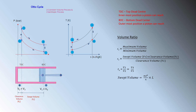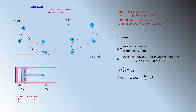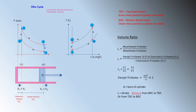Swept volume equals πd²/4 times l, where d is the diameter of the piston or bore of the cylinder, and l is the stroke — the distance the piston moves from TDC to BDC or BDC to TDC.